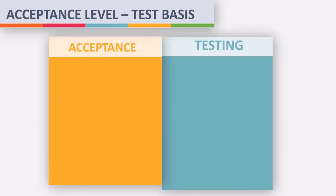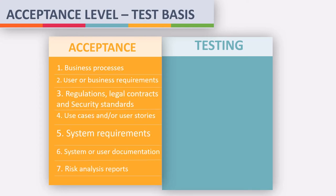Let's now move on to acceptance testing. If you see any high-level document, you can consider it as a requirement for acceptance testing. The first requirement is business process, user or business requirements — these documents contain high-level requirements used to verify whether the developed software meets expectations. The next point is standards, such as regulations, legal or security standards, used to check if the software complies with required standards.